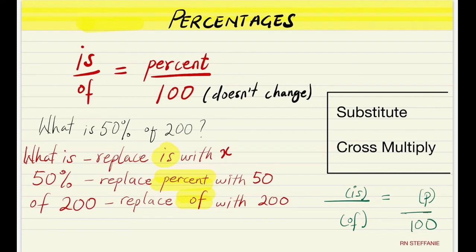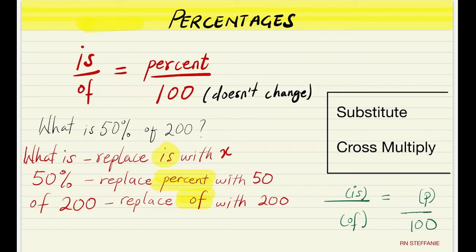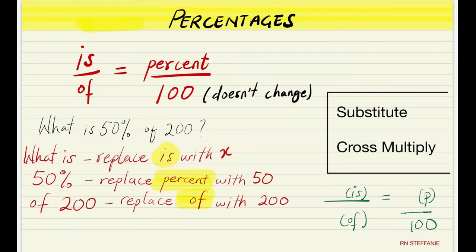The question we're going to use says: what is 50% of 200? So we substitute — it says 'what is.' We don't know what, so we're going to replace 'what' with X. That means we're replacing 'is' with X since we don't know what 'what' is, and I'm going to be substituting them in this corner.